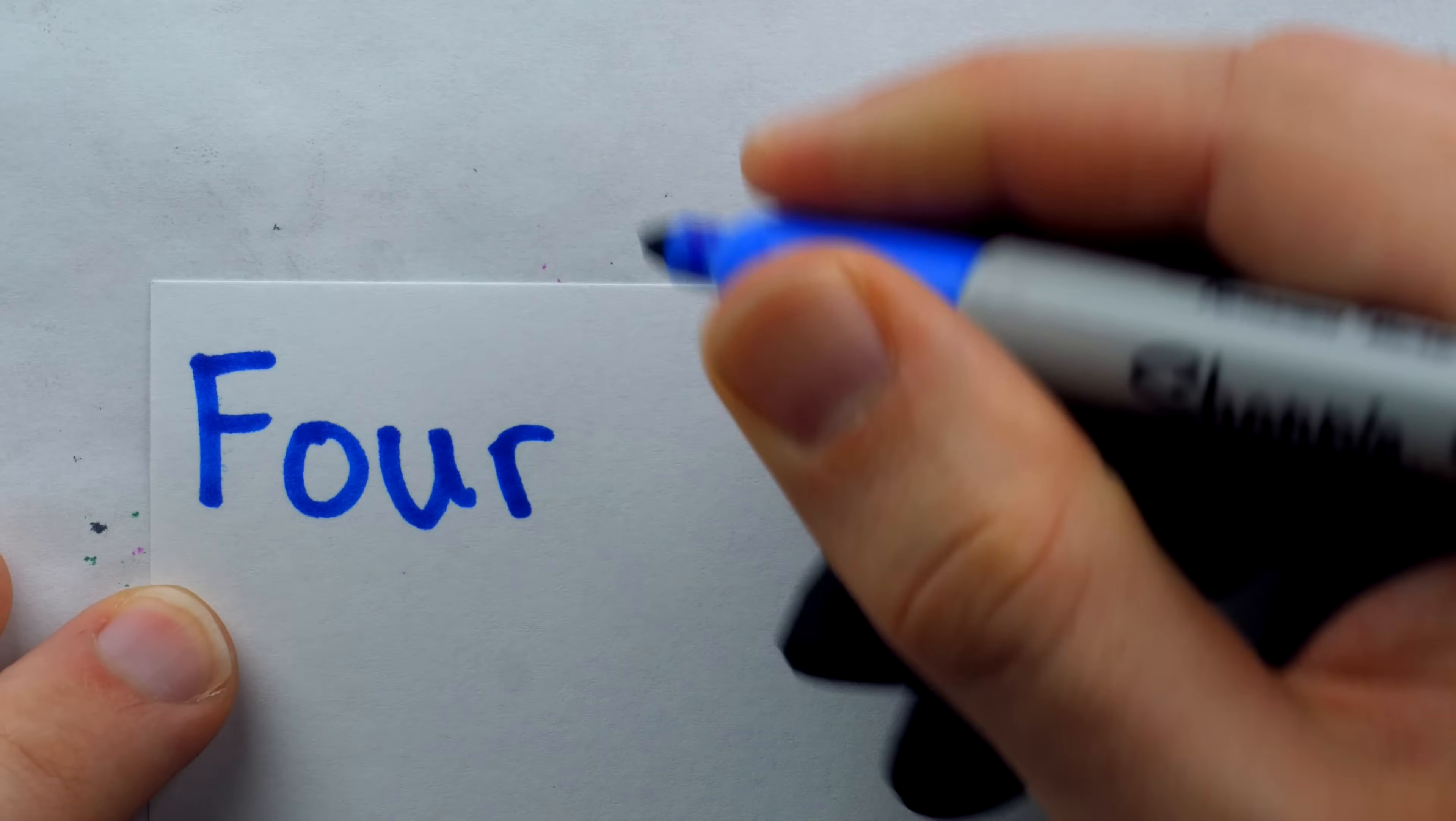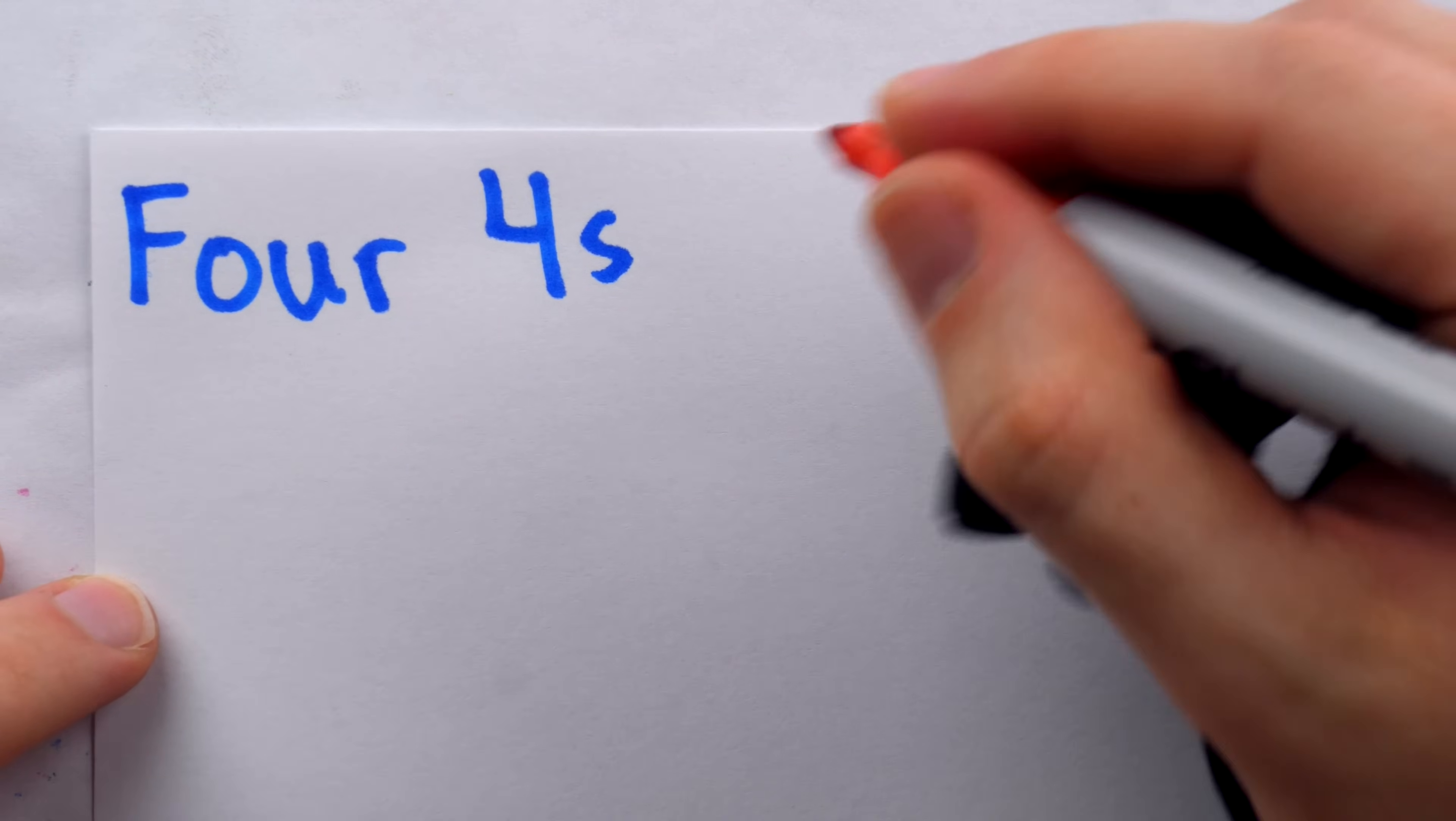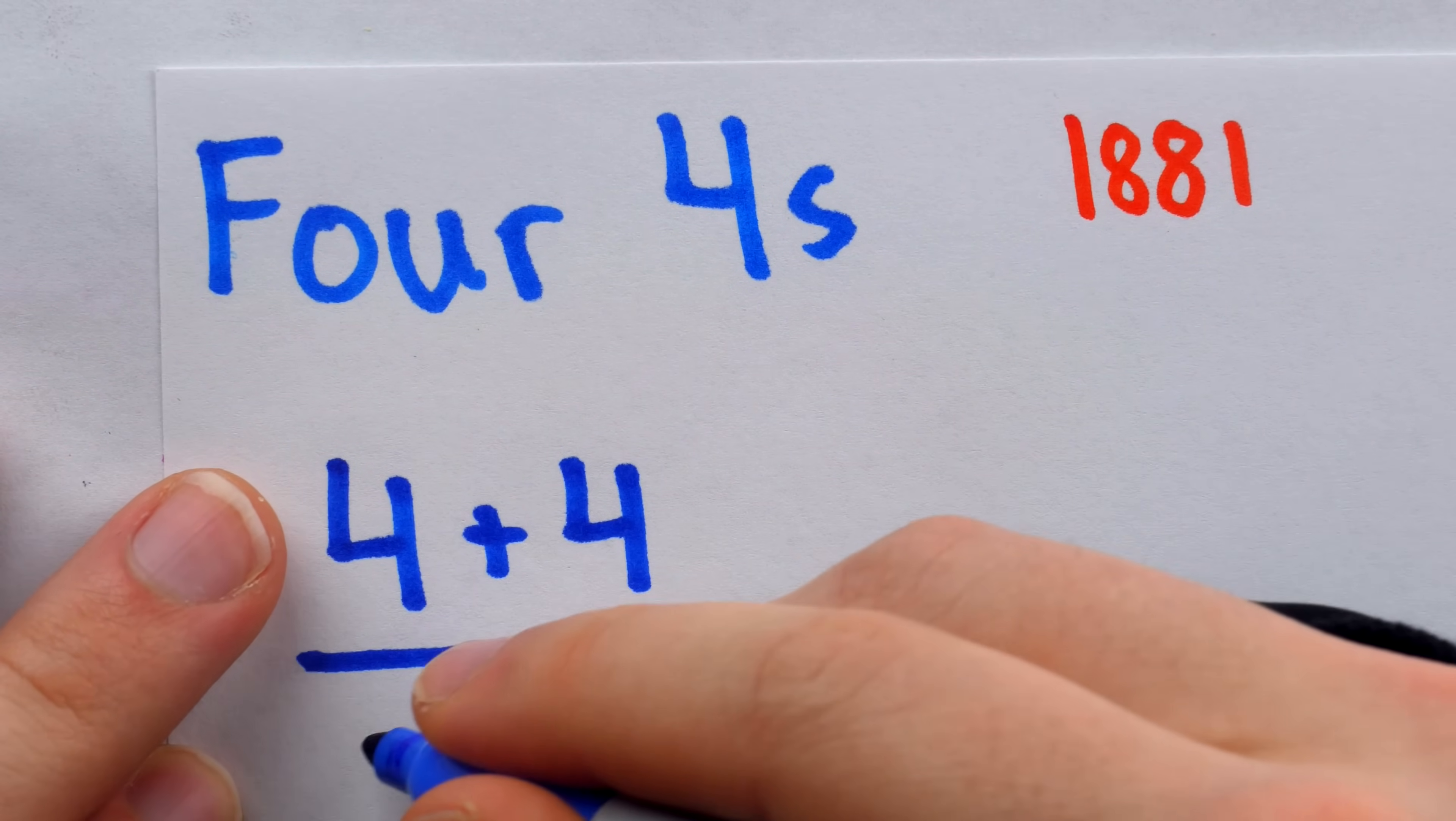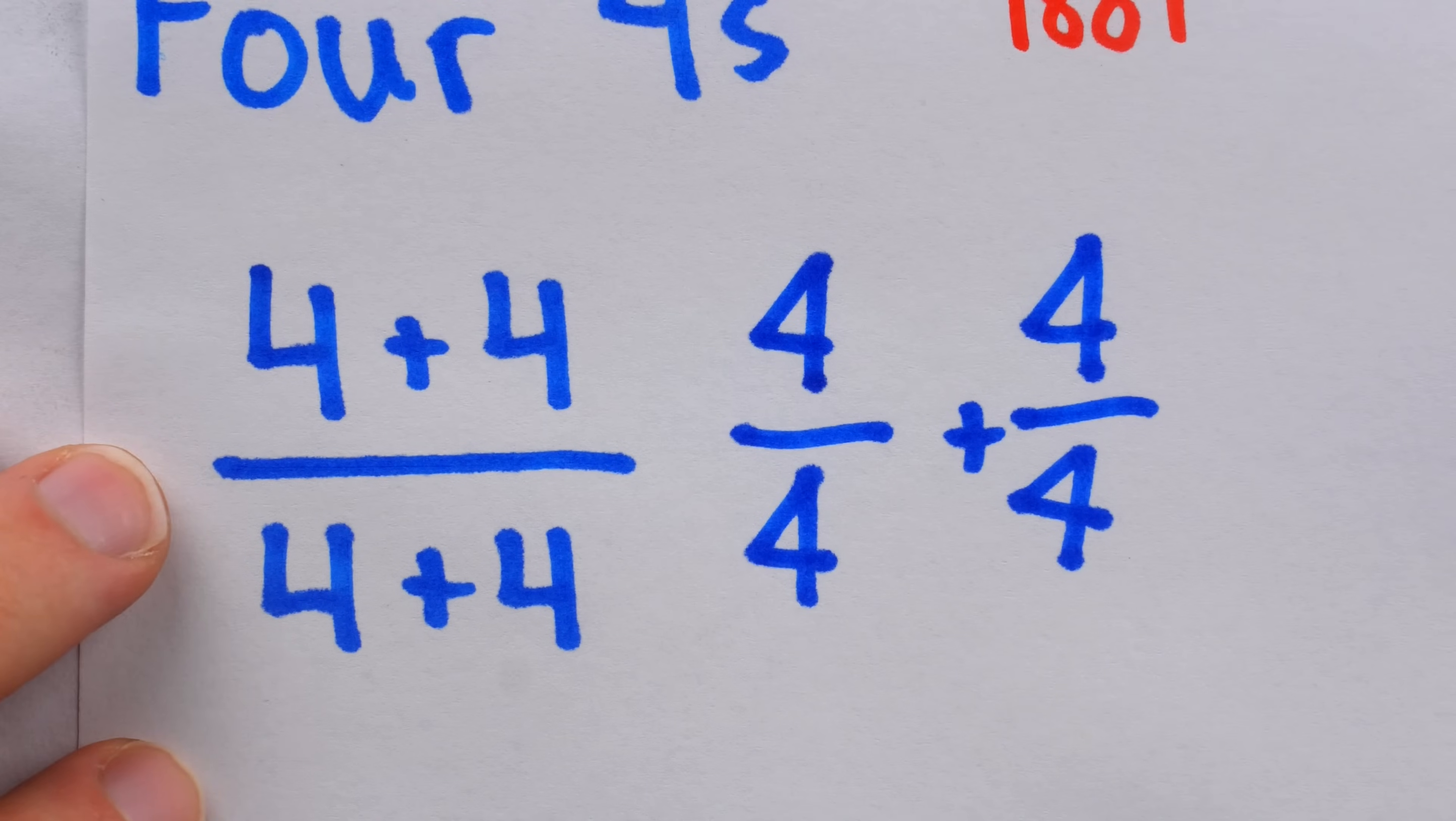There's a popular recreational math problem which dates back to 1881 called the 4-4s problem. It's just generally the challenge of writing a particular number using 4 fours and some set of pre-specified math operations. It seems like just the sort of math challenge that might go viral on the modern internet, but again, it was first introduced in 1881. Yeah, the same year that Guccio Gucci was born. If you've never seen the 4-4s challenge before, here's a couple quick examples.